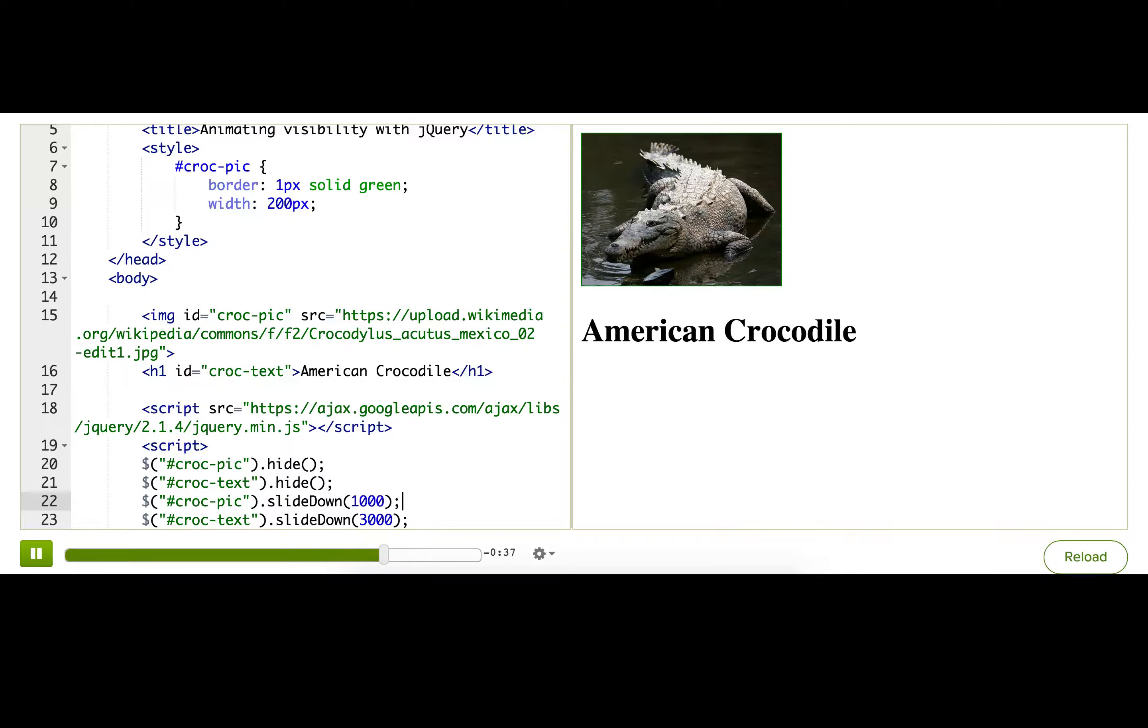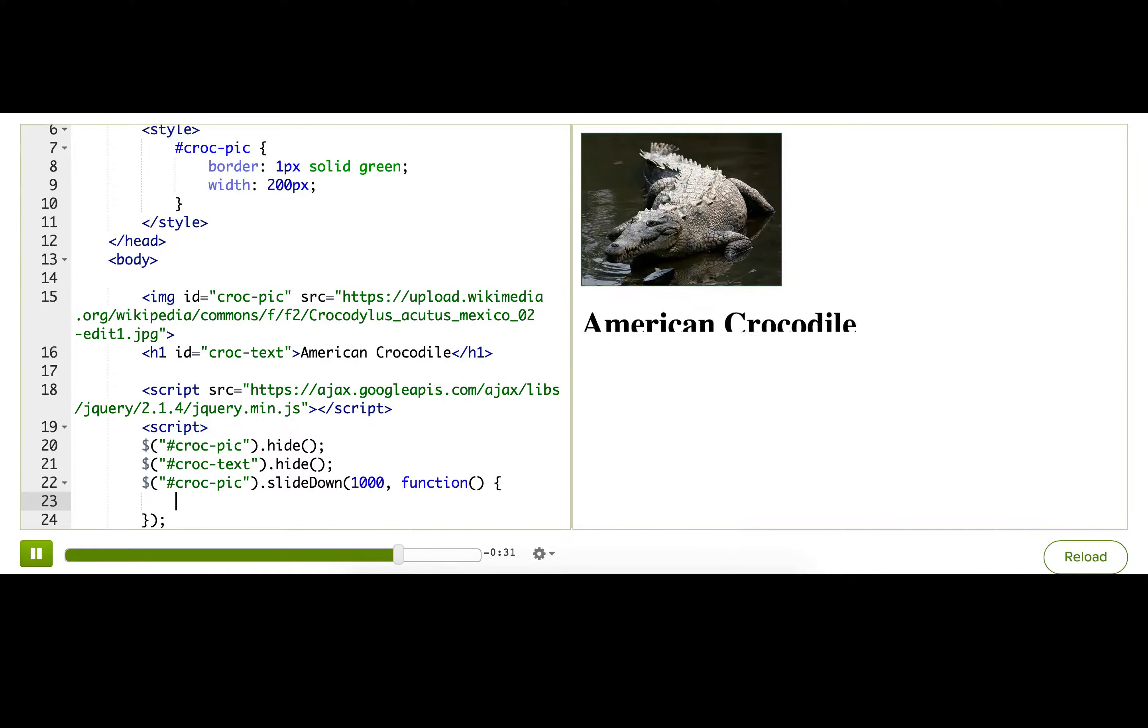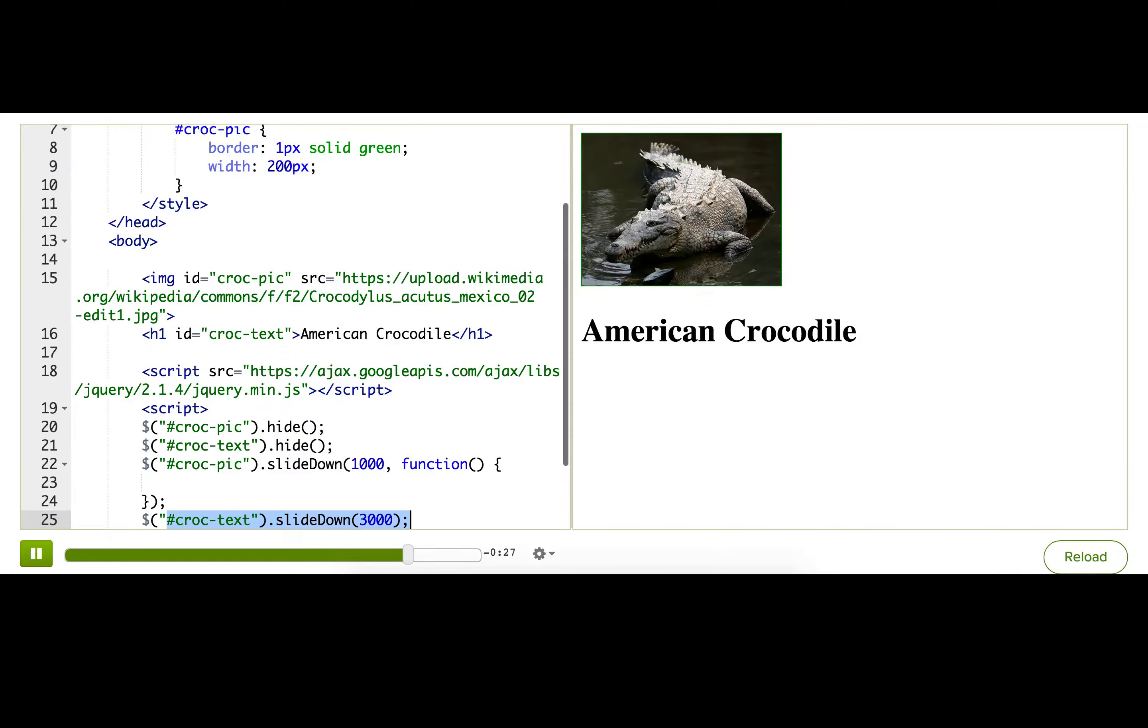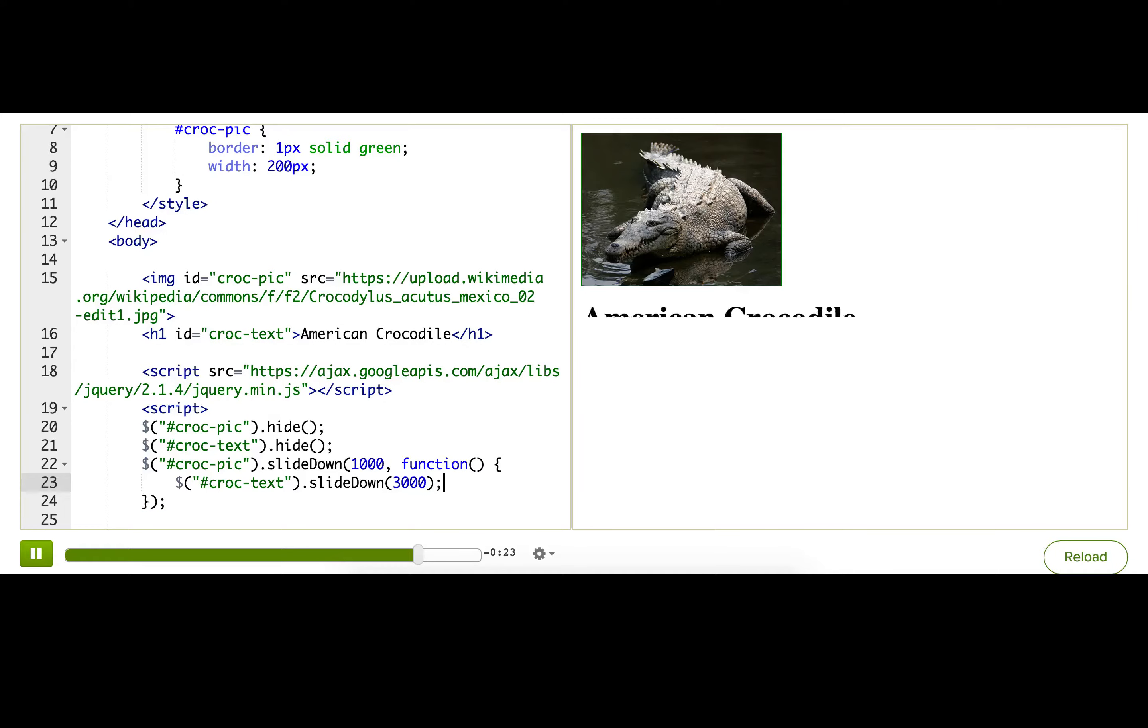For that, we can pass a callback function as the second parameter of the slideDown function. jQuery will call that callback when the animation is complete, which is just what we want. Let's try it out. Dun-da-dun. There we go.